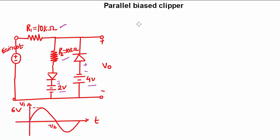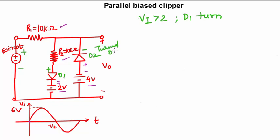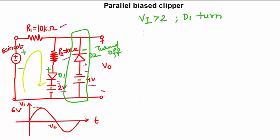When Vi is greater than 2 volts, diode D1 will turn on. We are applying the positive of the input to the positive of D1, while the positive is applied to the negative terminal of D2, so D2 will be turned off. We need not consider D2 in the positive half cycle. So for Vi > 2V, D1 turns on. Applying KVL: Vi − I1·R1 − I2·R2 − 2 = 0.